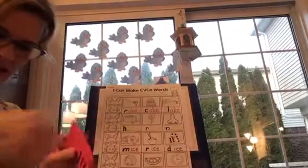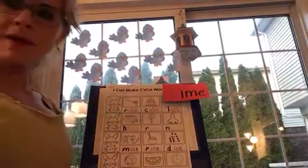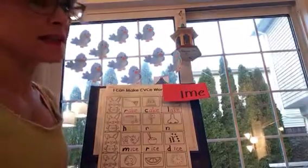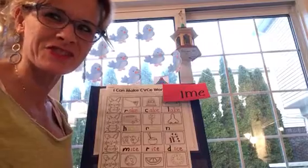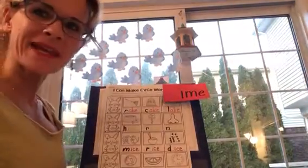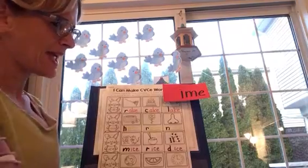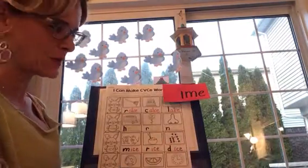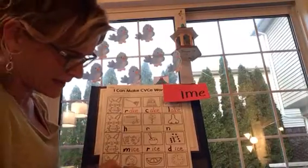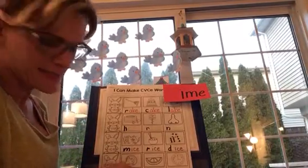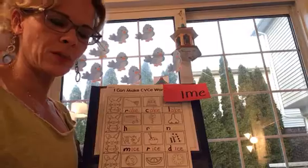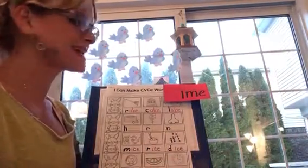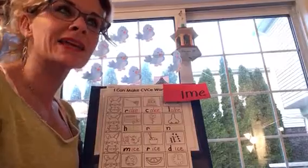And now it's time for the 'ime' family — that silent E is powering up the I. We want to make 'dime.' Little and thin, I remember you're worth ten — you do remember those math facts. So we're going to put a D in front of 'ime' and we get dime. Very good. We're going to make another D, this time a little bit closer to the rest of the word. Dime. Good job. Okay, took away the D. What letter would I need to replace it with to turn dime into lime?